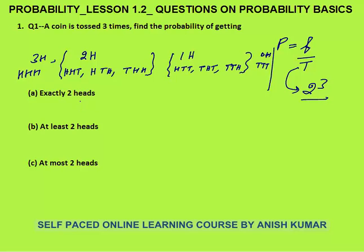Now the first question: we need to calculate the probability of exactly two heads. Favorable cases are three, total cases are eight. Exactly two heads has three favorable cases, so probability will be 3 by 8.